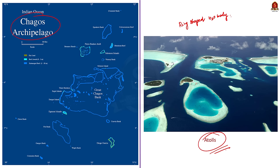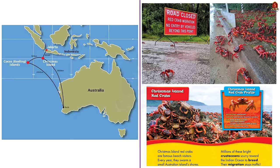Fourthly, Christmas Island — it is located in the north-eastern part of the Indian Ocean, to the south of Java. It is actually an Australian territory. It is known for its unique ecosystem, including the annual red crab migration phenomenon and diverse marine life of the islands.